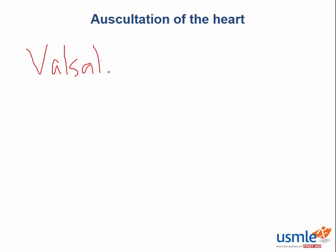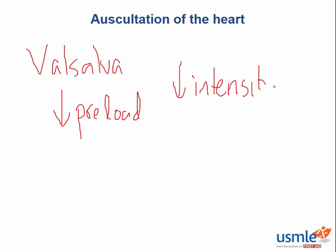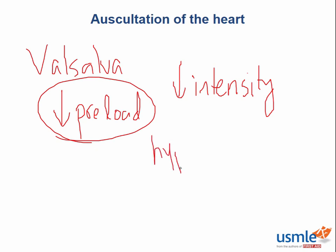The Valsalva maneuver, which involves having the patient bear down as if having a bowel movement, results in a decrease in preload. When a patient performs Valsalva, they increase intrathoracic pressure, which decreases venous return and therefore decreases preload. Going back to our principle that flow is proportional to murmur intensity, most murmurs will decrease in intensity. The one exception in which intensity is increased during Valsalva is hypertrophic cardiomyopathy.